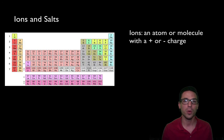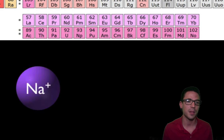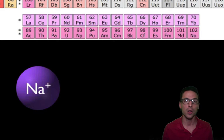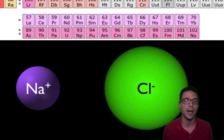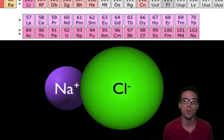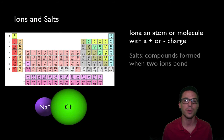Ions you might be familiar with are sodium and chloride. Sodium (Na), on the left side of the periodic table, tends to lose an electron and carries a positive charge — we call it a sodium ion. Chlorine (Cl) tends to gain an electron giving it a negative charge — we call it a chloride ion. When a positive and negative charge are brought close together they attract and form what's called an ionic bond.